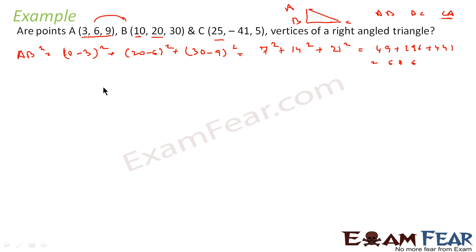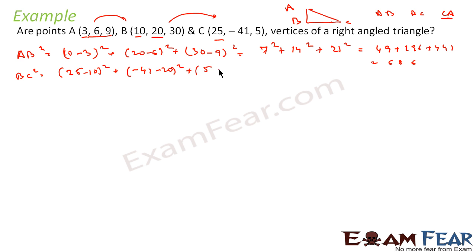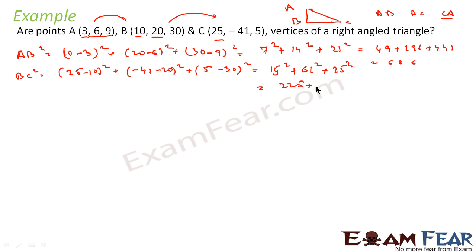Now let us find BC². BC² is nothing but (25 minus 10)² plus (minus 41 minus 20)² plus (5 minus 30)². That came out to be 15² plus 61² plus 25², which is 225 plus 3721 plus 625, and that value is 4751.